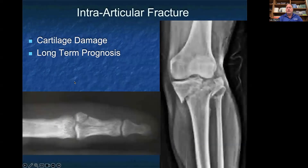An intraarticular fracture describes a fracture that goes into the joint space itself. This leads to a long-term prognosis of increased risk of osteoarthritis developing there and also leads to cartilage damage on the articular cartilage in the joint surface. On the right, you can see an intraarticular fracture of the tibia going into the knee joint, and on the left, an intraarticular fracture into the proximal interphalangeal joint on a finger.